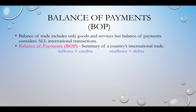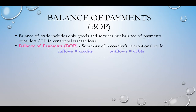Money coming in — inflows — are credits to our account. Anything going out of the country — outflows — would be considered a debit. When we talk about the balance of payments for the United States, we're talking about dollars: what is our balance in terms of our currency.